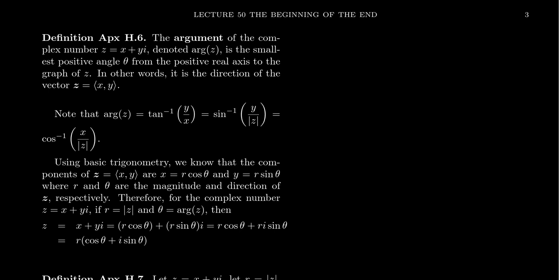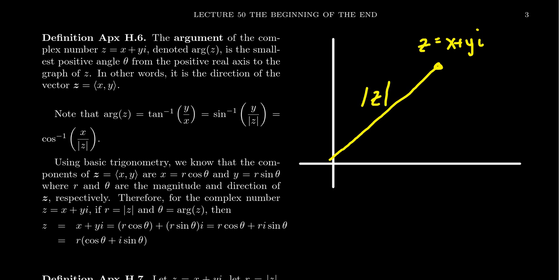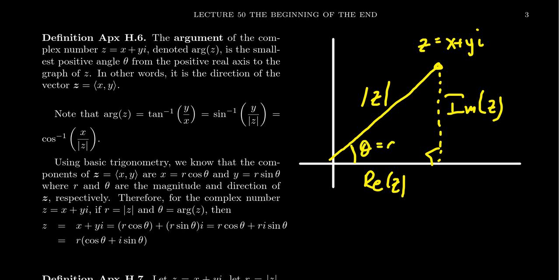Related to this is the idea of the argument of a complex number, which is essentially the angle that the complex number forms with the x-axis. Redrawing the picture — if we have some complex number at point x comma y, thinking of it as x plus yi, the distance to that point z is the modulus of z. Associated with this is the right triangle for which the horizontal distance is the real part of z and the vertical distance is the imaginary part of z. The angle theta here is what we call the argument of z — the angle the complex number forms with the positive real axis.